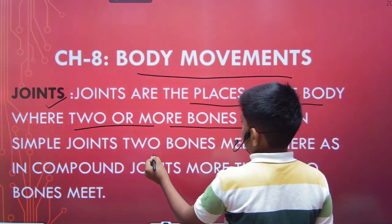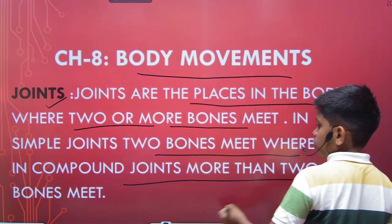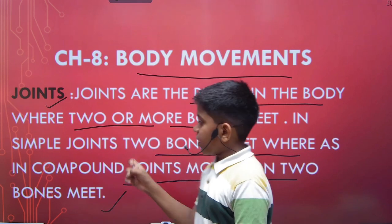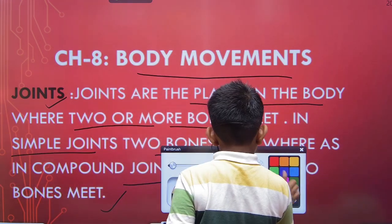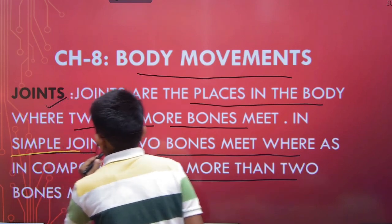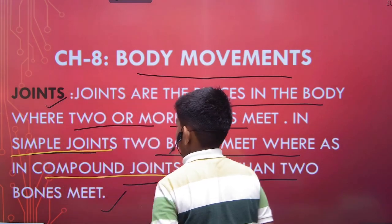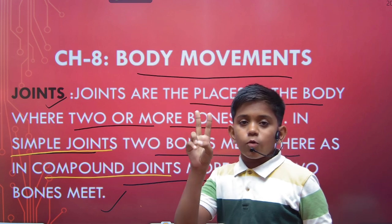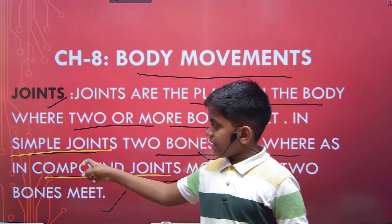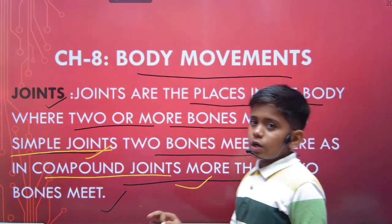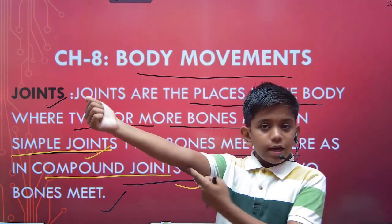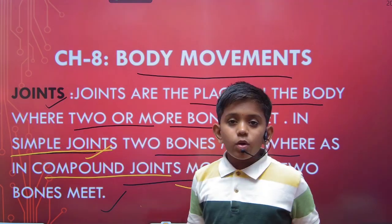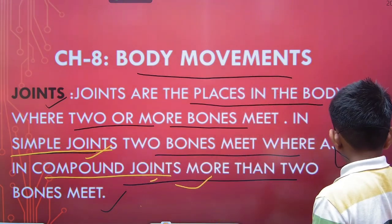In simple joints, two bones meet, whereas in compound joints, more than two bones meet. There are two types of joints: the first is the simple joint and the second is the compound joint. You can note this in your copies. For example, at the elbow, two bones meet — so it is a simple joint.